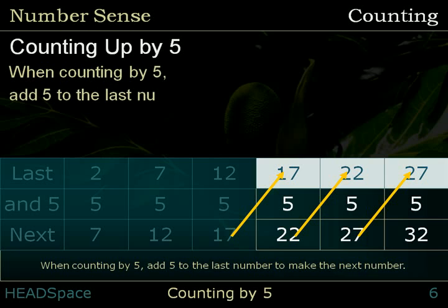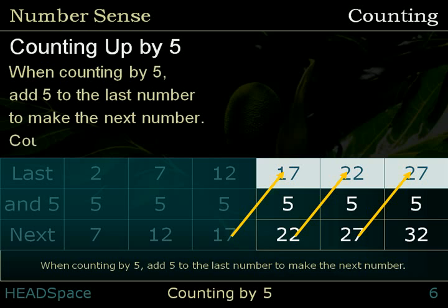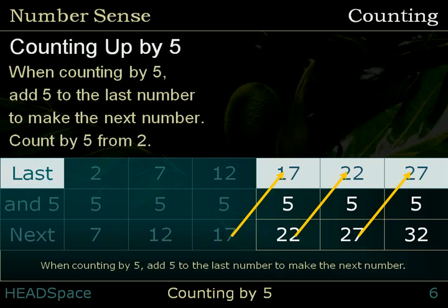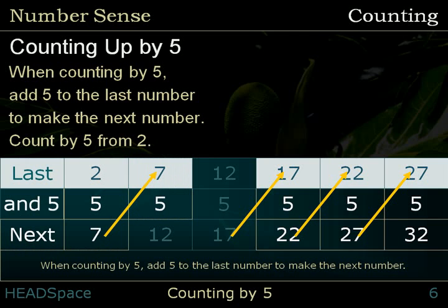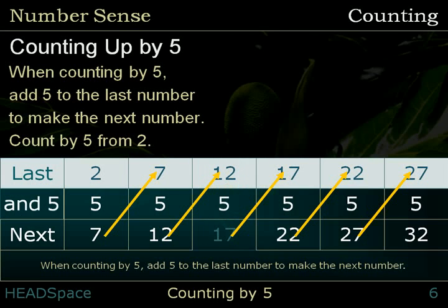When counting by 5, add 5 to the last number to make the next number. Count by 5 from 2. Last number: 2. And 5. Next number: 7. Last number: 7. And 5. Next number: 12. Last number: 12. And 5. Next number: 17.